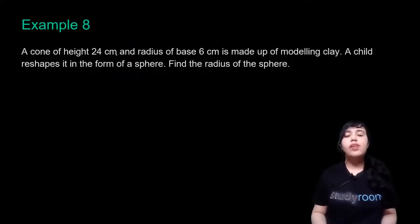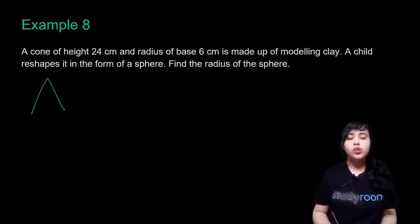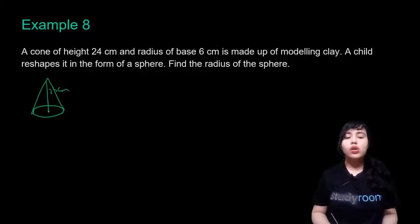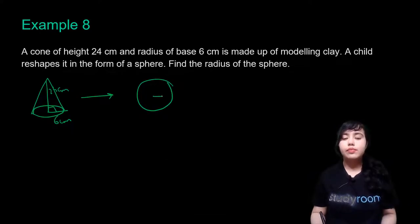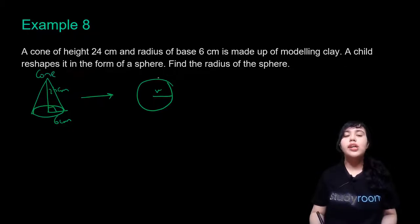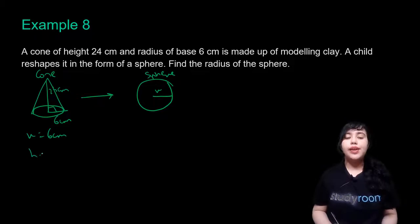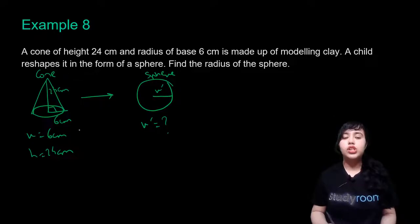You've been given a cone of height 24 centimeters. The radius of its base is 6 centimeters, and it has been converted to a sphere. The sphere will have some radius R′. You have to find out this radius. So we have a cone converted to a sphere: radius of cone = 6 cm, height = 24 cm, and radius of sphere R′ is the unknown.